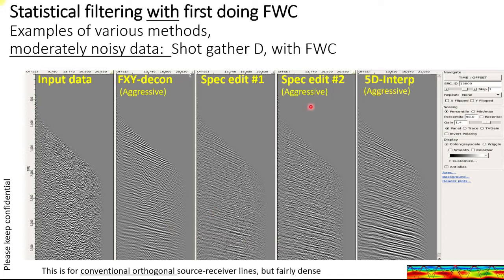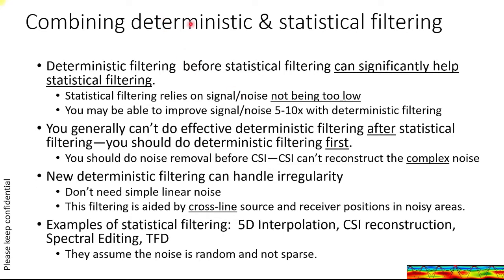These last two methods are actually 5D methods, this one is just 3D, and this one is halfway in between. Combining deterministic and statistical filtering has power, but we need to apply deterministic filtering before statistical filtering. Statistical filtering relies on signal to noise not being too low — if it's too low, it's just going to lock onto the noise and create fake signal. So it's important to improve your signal to noise by 5 to 10x with deterministic filtering. You generally can't do effective deterministic filtering after statistical filtering.